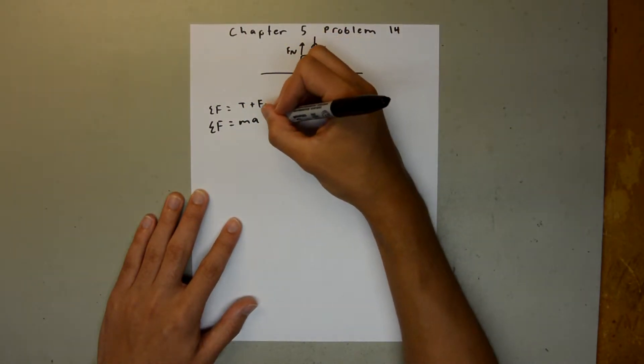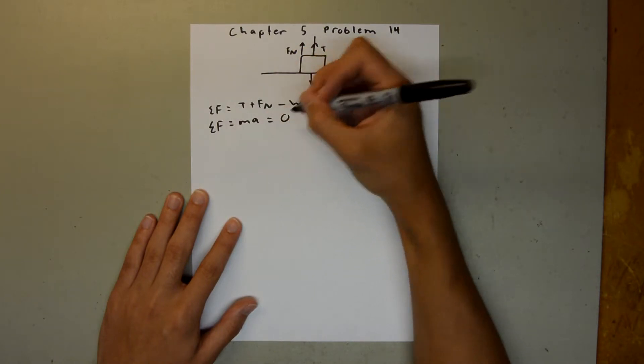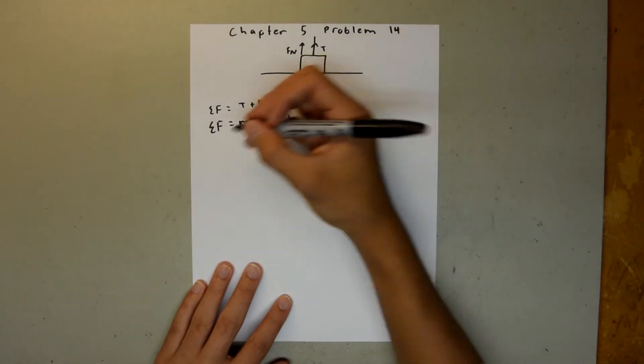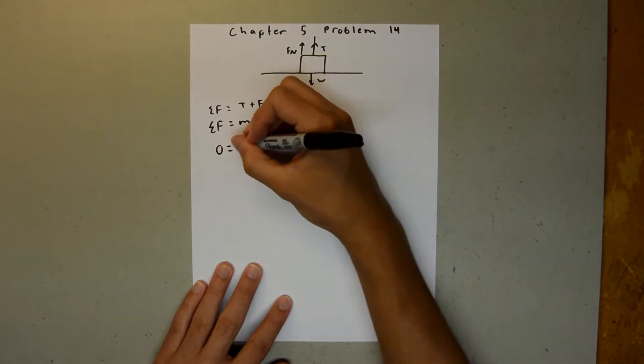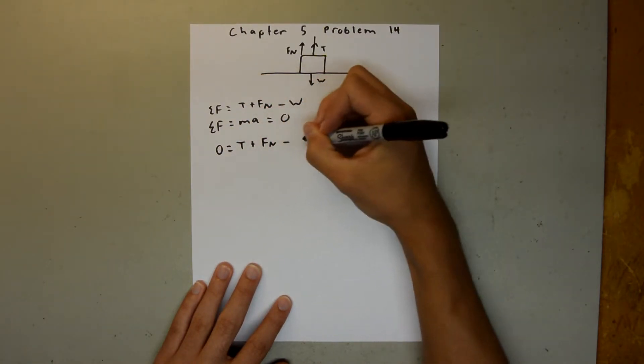Therefore, the acceleration is zero, so this term is equal to zero. We can say zero is equal to T plus Fn minus W.